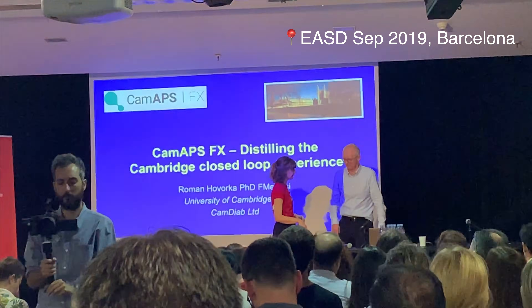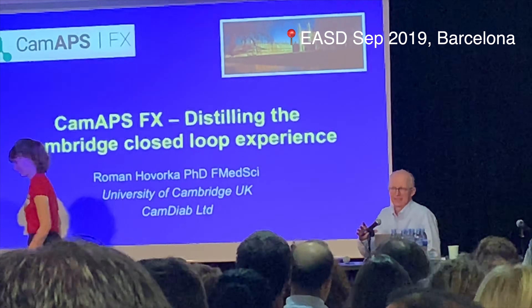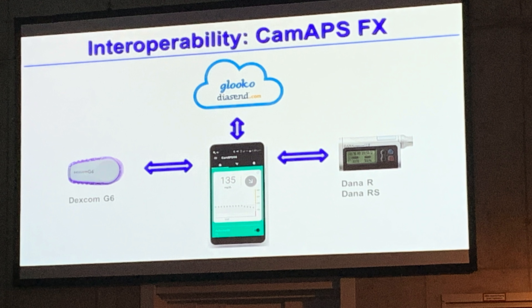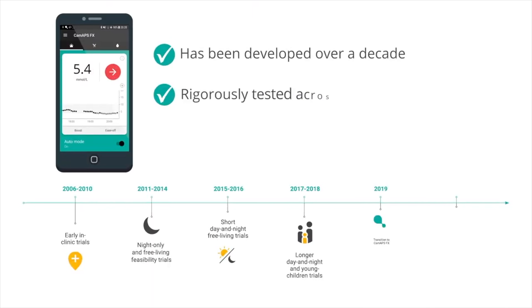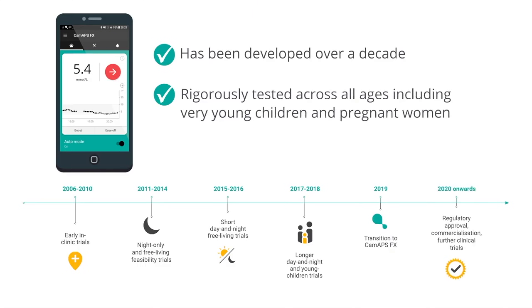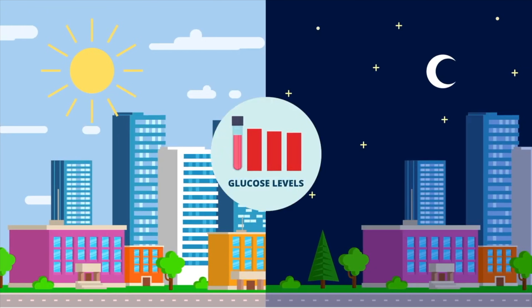It's an app on your own Android device which connects to a Dexcom G6 continuous glucose monitor and a compatible insulin pump. This is a well-established system with many users already using it, reporting great results, including very high time in range during bedtime.